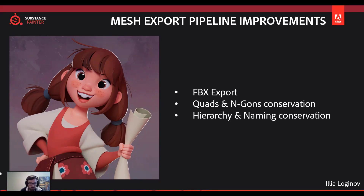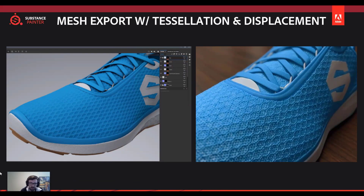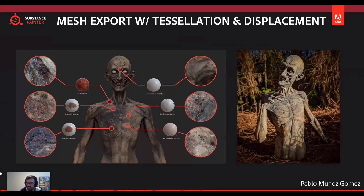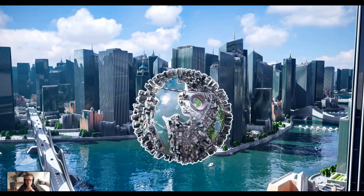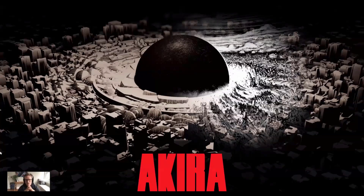Still within the mesh export pipeline, Substance Painter 2020.1 will also come with a mesh export that can get your displacement and tessellated meshes out of Substance. You know how you spend so much time trying to get that perfect displacement or tessellation in Substance, and once you move to your DCC app you have issues matching it — now you can export the mesh with the tessellation and displacement you created. This is especially useful for 3D printing or getting displacement into your DCC app.